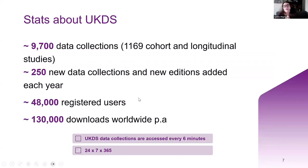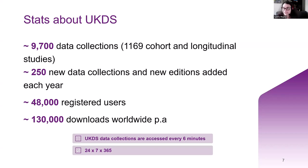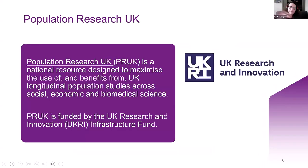A couple of stats about us: we have around 9,700 data collections, out of which over a thousand are cohort and longitudinal studies. We ingest around 250 new data collections and new editions each year. We have roughly 50,000 registered users, and to put it in practice — every six minutes, every day, someone accesses data from UKDS. So if you've never used UKDS before, by all means come to us, get in touch with us. We're happy to have Zoom calls as well, not only emails.